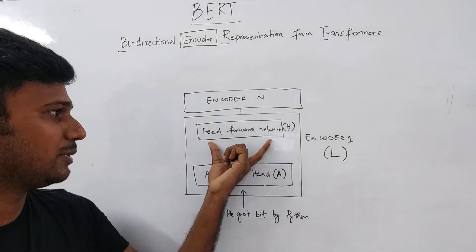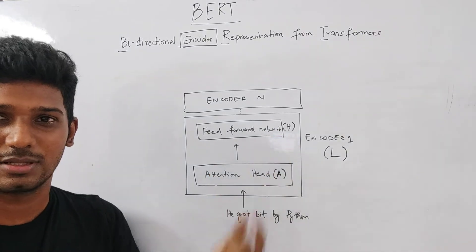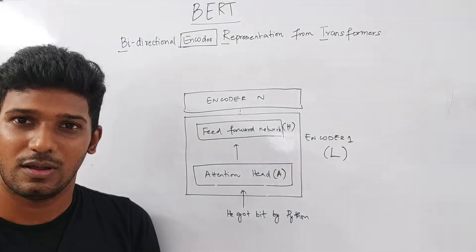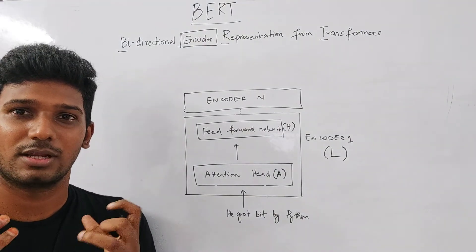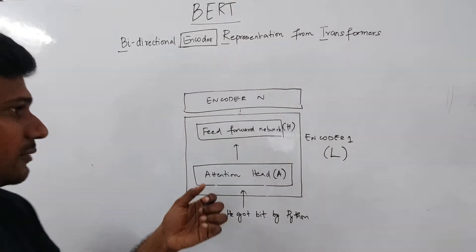And then that is followed by a feed forward network. And in this feed forward network, there can be 700 hidden neurons or 1000 hidden neurons or whatever. So these are all the things that capture the different configurations of BERT.